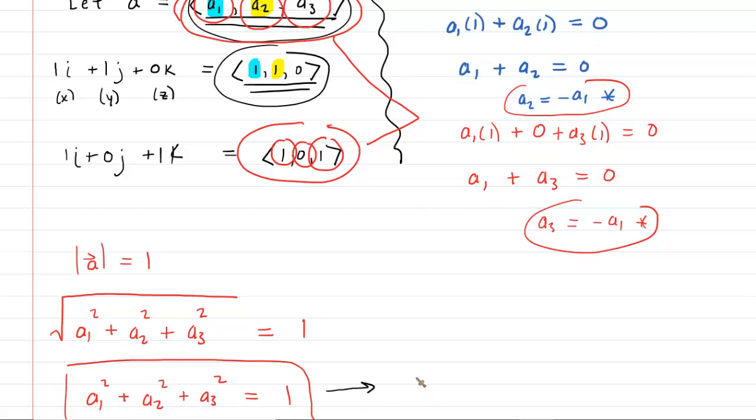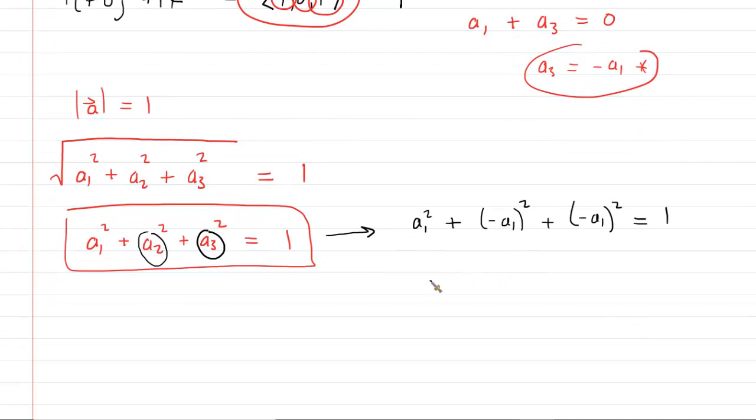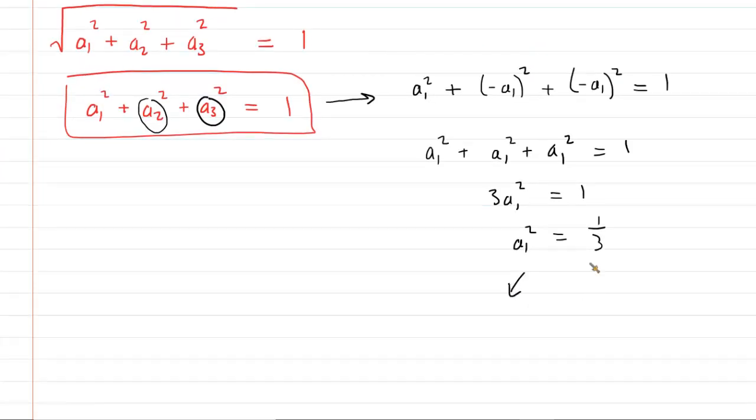So here we go. We're going to have A1 squared plus... And then where it says A2, we can substitute in negative A1 and square it. And then similarly, we can substitute A3 with negative A1 as well, square it and then set that equal to 1. So now we have an equation that we can use to actually solve for A1. Because we're going to have A1 squared plus another A1 squared plus another A1 squared equals 1. We add those together, we get 3A1 squared equals 1. Divide both sides by 3 and then take the square root of both sides. Now when you square root here, you're going to get two possible answers for A1. You would have A1 is equal to the positive square root of 1 over 3, or A1 could equal the negative square root of 1 over 3. In both of these cases, we might want to simplify it. The square root of 1, of course, is just 1. So we can write it like that, and the same kind of thing over here. We're going to have negative 1 over the square root of 3.